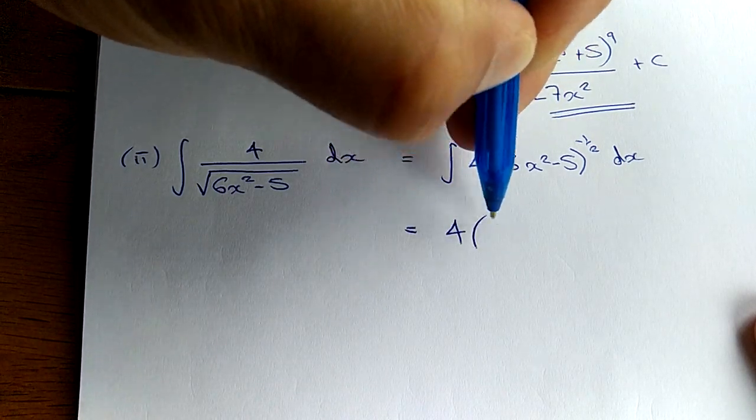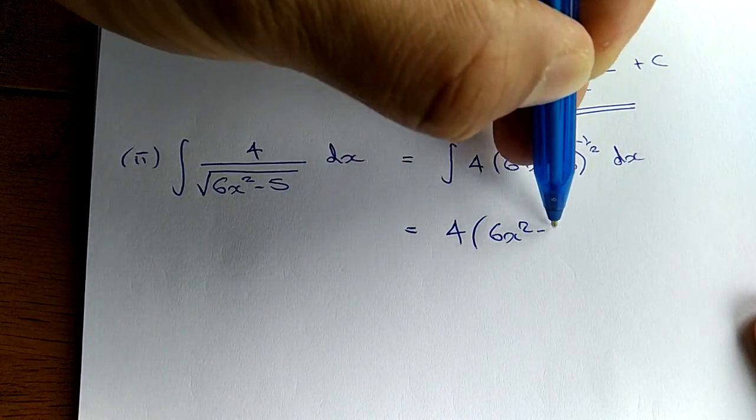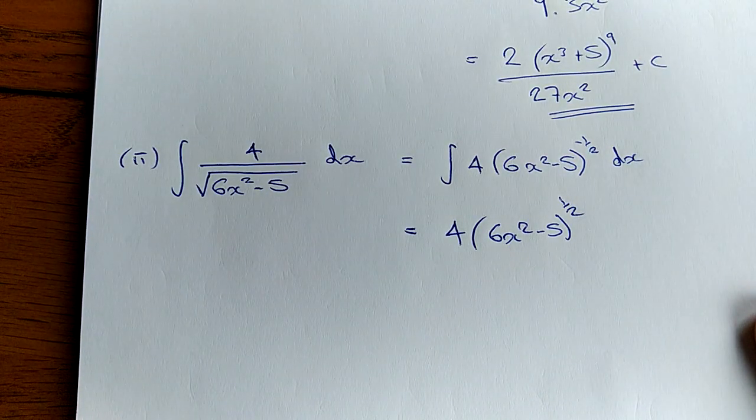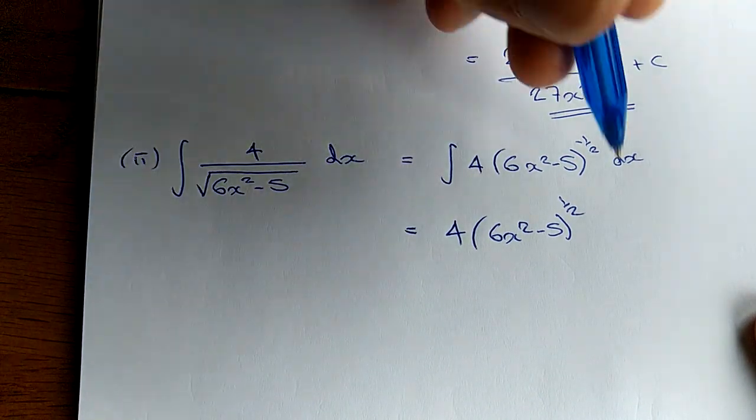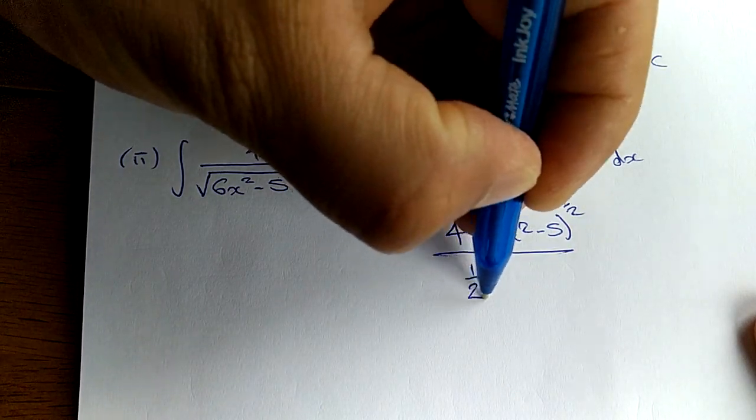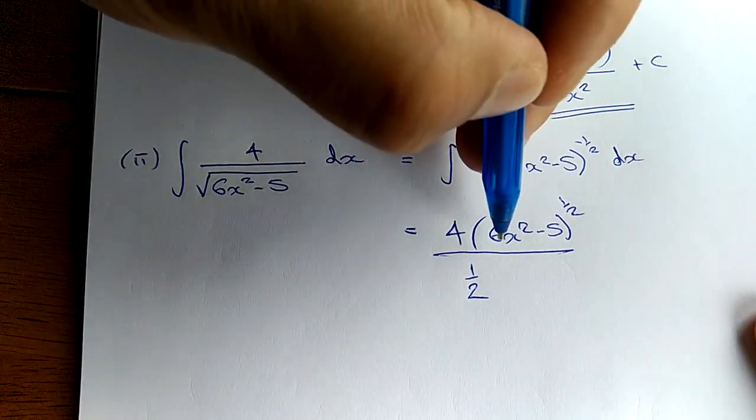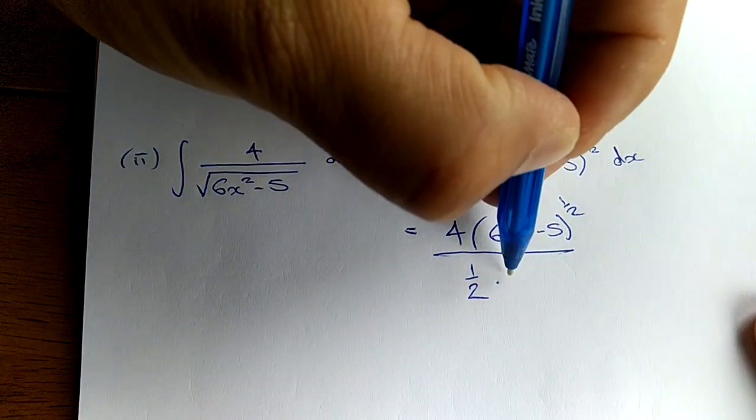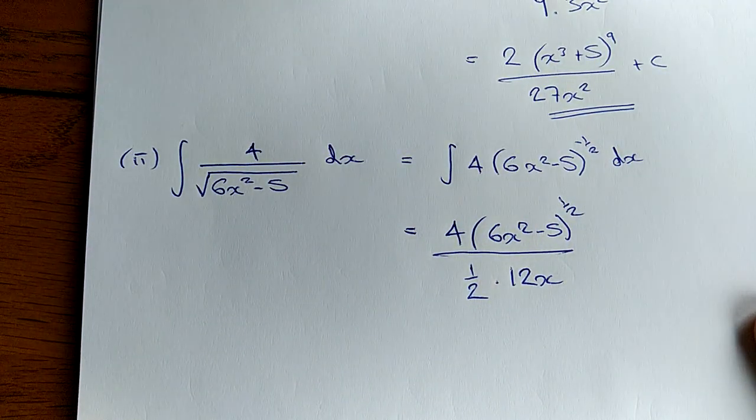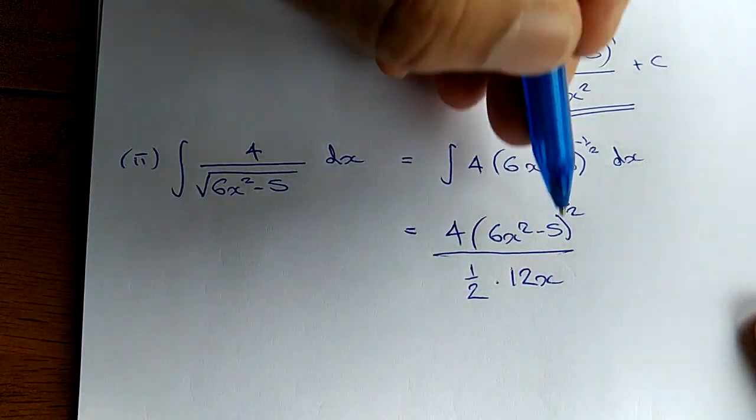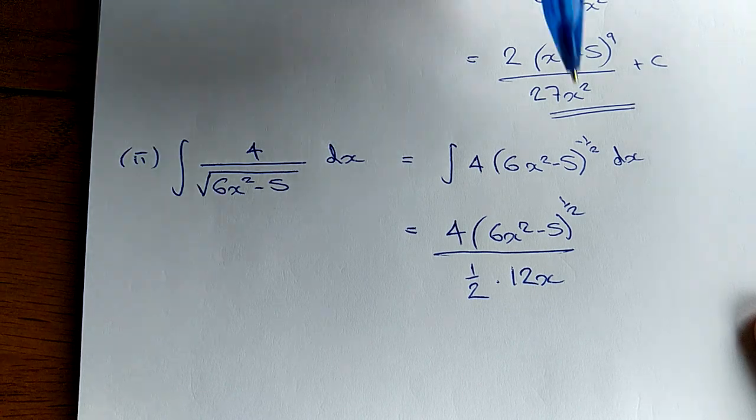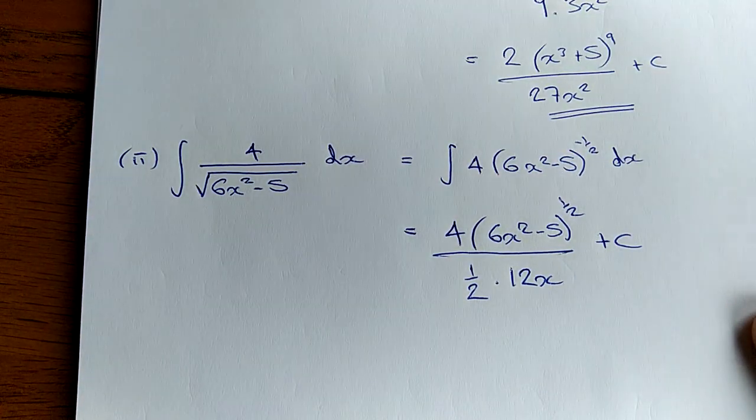So let's write this down because we're not changing it in any way. You add 1 to the power, so negative a half becomes positive a half. Divide by the new power, like so. And we also divide by the derivative of what's inside the brackets, which would be 12x, because the derivative of 6x squared is 12x and the derivative of negative 5 is just 0, so we don't bother with that. Plus c, obviously.